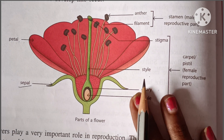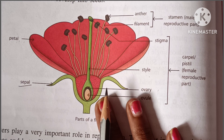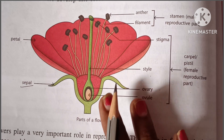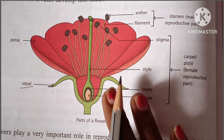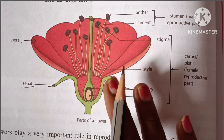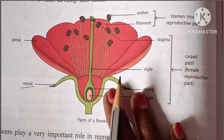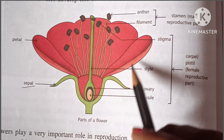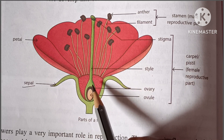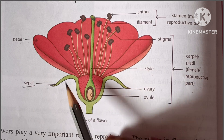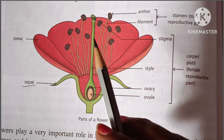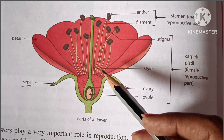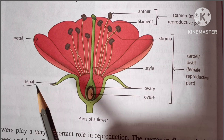In this video, we are discussing about the typical structure of the flower, which plays an important role in reproduction. In flowers or in plants, sexual reproduction takes place. This is the simple structure of the flower, or the typical structure of the flower, and this flower is divided into four main types or parts.